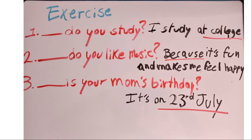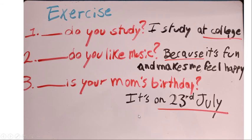Now we have some exercises — three exercises to complete with the right question word. For example: number one, '__ do you study English?' — I study at college. College is a place. Number two, '__ do you like music?' — Because it's fun and makes me feel happy. 'Because' gives us a reason. Number three, '__ is your mom's birthday?' — It's on the 23rd of July. We have a date. Try to think about the right question words.